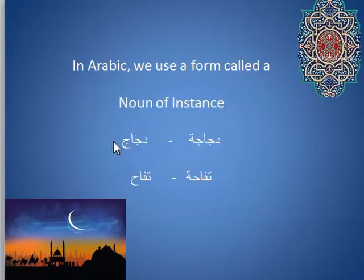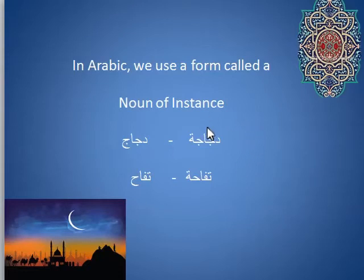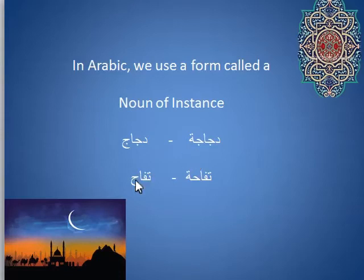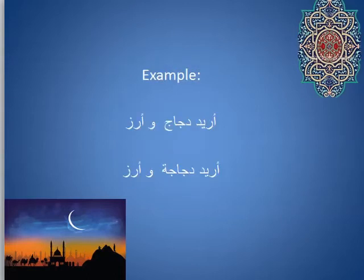'Dijaj' just means generic chicken. If you say 'ana uheb dijaj,' it means you like chicken. You could go into a restaurant and on the menu it will say 'dijaj' — and that's what you get, because you're not getting one entire chicken. You're probably getting some portion of a chicken, possibly parts from several chickens. Now, if you were to go into an Arab restaurant and order 'dijaja,' you would get a whole entire stuffed chicken, because that's what it means — a chicken. 'Tufa' refers to apple; 'tufaha' is one actual apple.